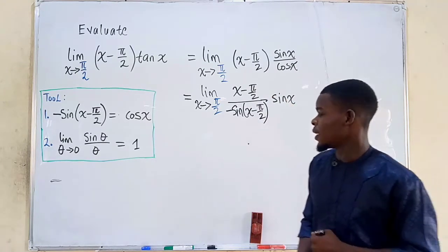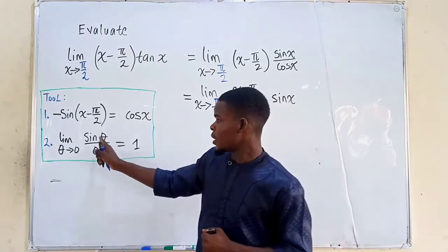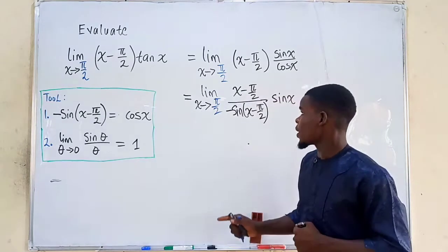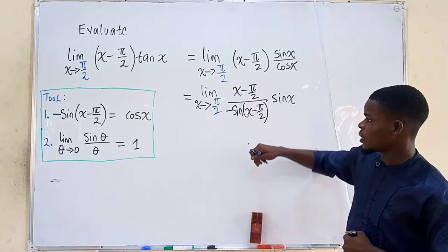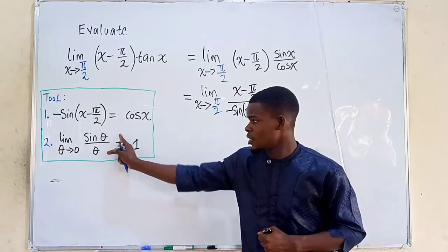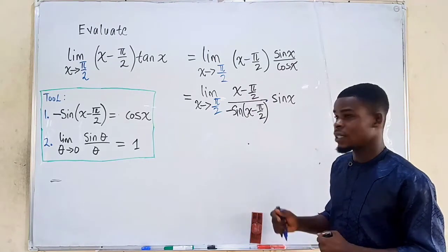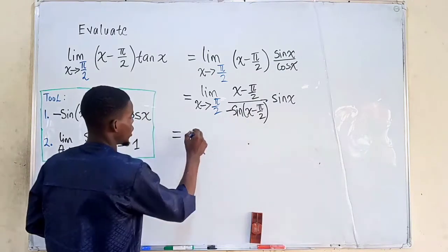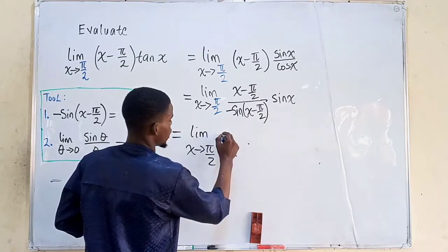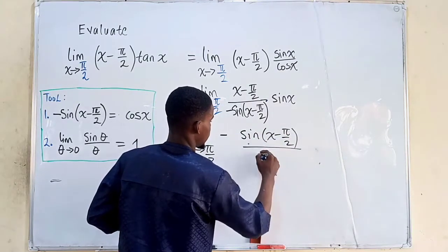We're going to make use of the second tool, which tells us that sin(θ)/θ as θ tends to 0 equals 1. Here we have (x minus π/2) divided by sine of (x minus π/2), which is almost the same format but inverted. So we invert it and take the reciprocal: the limit as x tends to π/2 of negative sine of (x minus π/2) divided by (x minus π/2), raised to the negative first power.